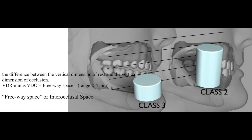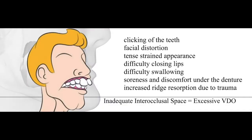When you miss the inter-occlusal space — for example, inadequate inter-occlusal space, meaning excessive vertical dimension of occlusion where the denture's vertical height is too excessive — the consequences include: clicking of the teeth, facial distortion, tense strained appearance, difficulty closing lips, difficulty swallowing, soreness and discomfort under the denture, and increased ridge resorption due to trauma.